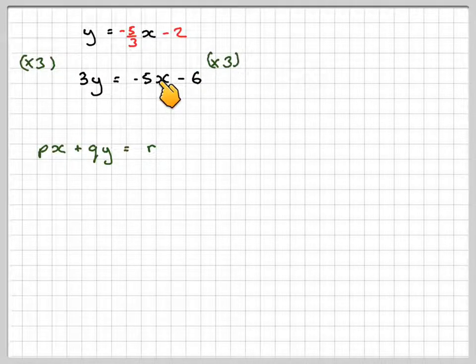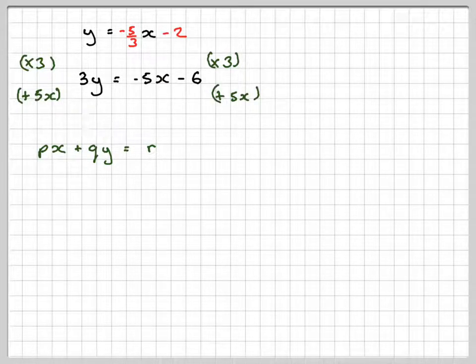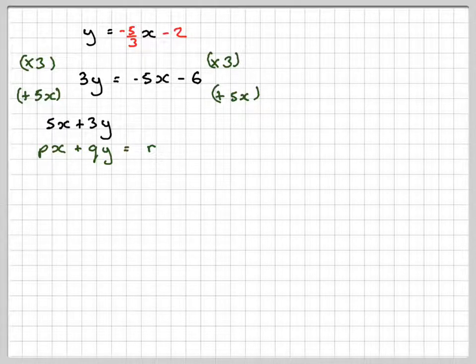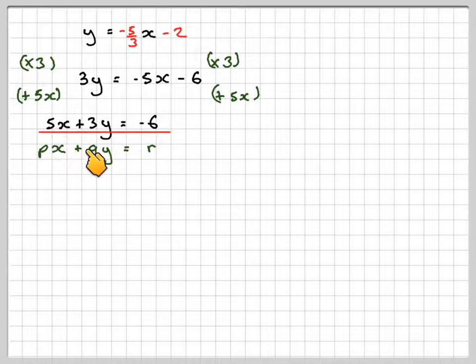Then what we need to do is add 5X to both sides. That will give me 5X + 3Y = -6. So we now have P is 5, Q is 3, and R is -6. We now have it in the correct format where P, Q, and R are integers. It doesn't say they have to be positive integers, just integers.